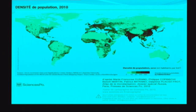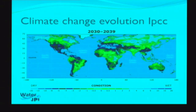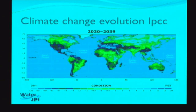Comparing with population density — even if you have very high temperatures in the Sahara, there are no inhabitants there. The inhabitants are along the coastline: Algeria, Morocco, Egypt, along the Nile. The dramatic consequences are visible in the Middle East, India, and China.